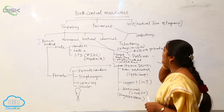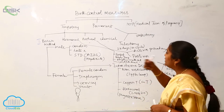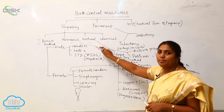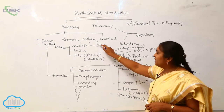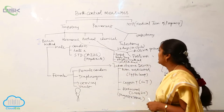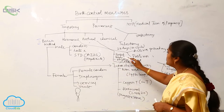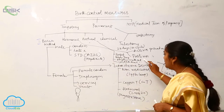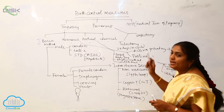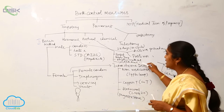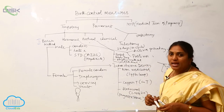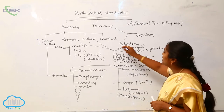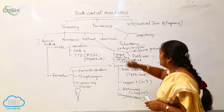The third type of temporary method is the natural method. The natural methods include basal body temperature, the rhythm method, and the lactation method. The fourth type is the chemical method.